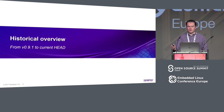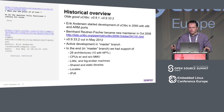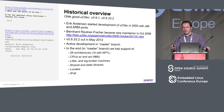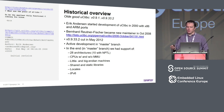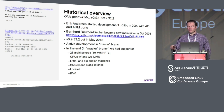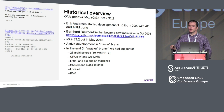Now let's take a historical overview from the very first commit to what we have now in the master branch of uClibc. It all started with Eric Anderson in an attempt to create the smallest fully functional C library for Linux. He started in year 2000 from a simple x86 port, adding more features and architectures later. More people got involved over time and it became quite a big project. At some point around 2008, maintainership was handed over to Bernard Rudner-Fisher, who was quite active until mid-2012.